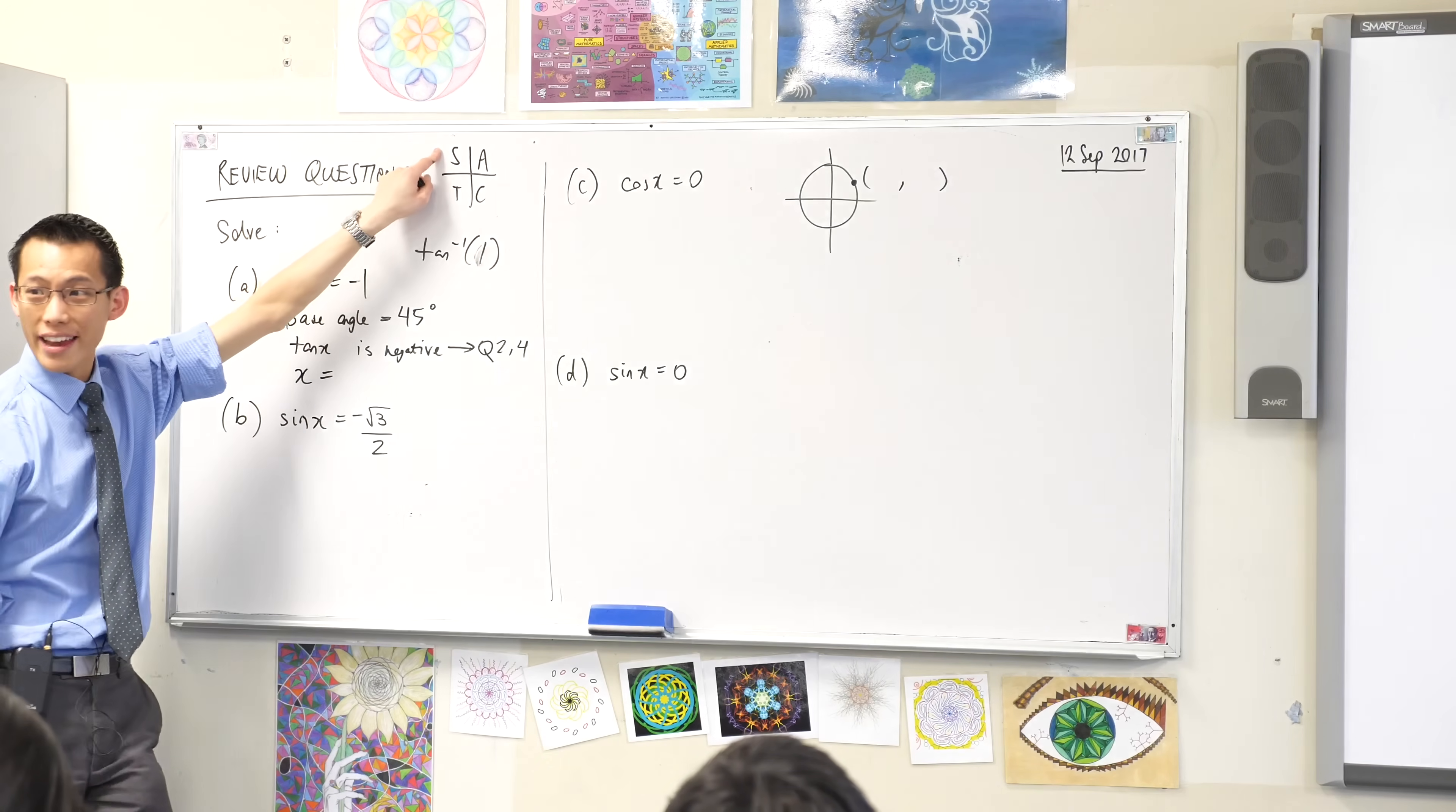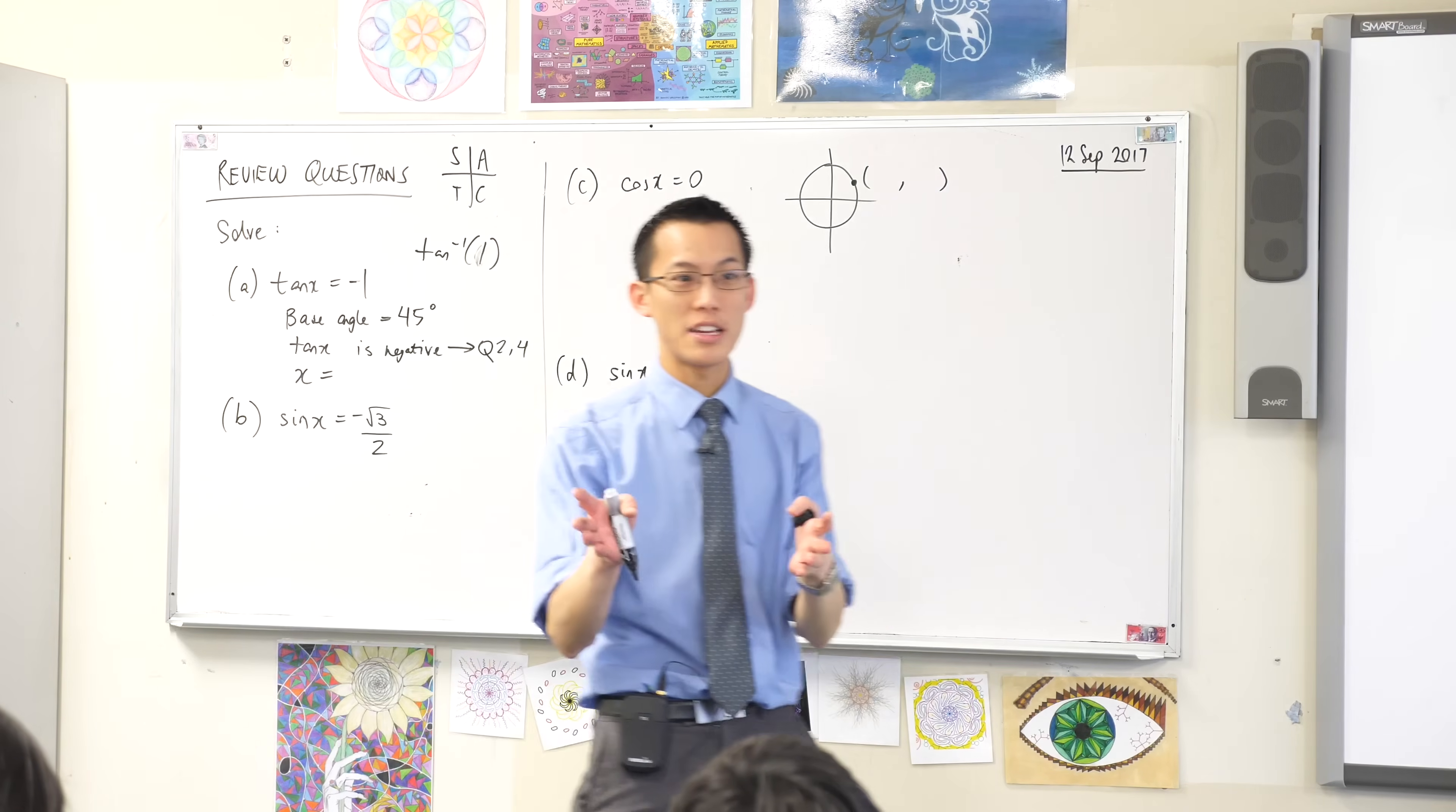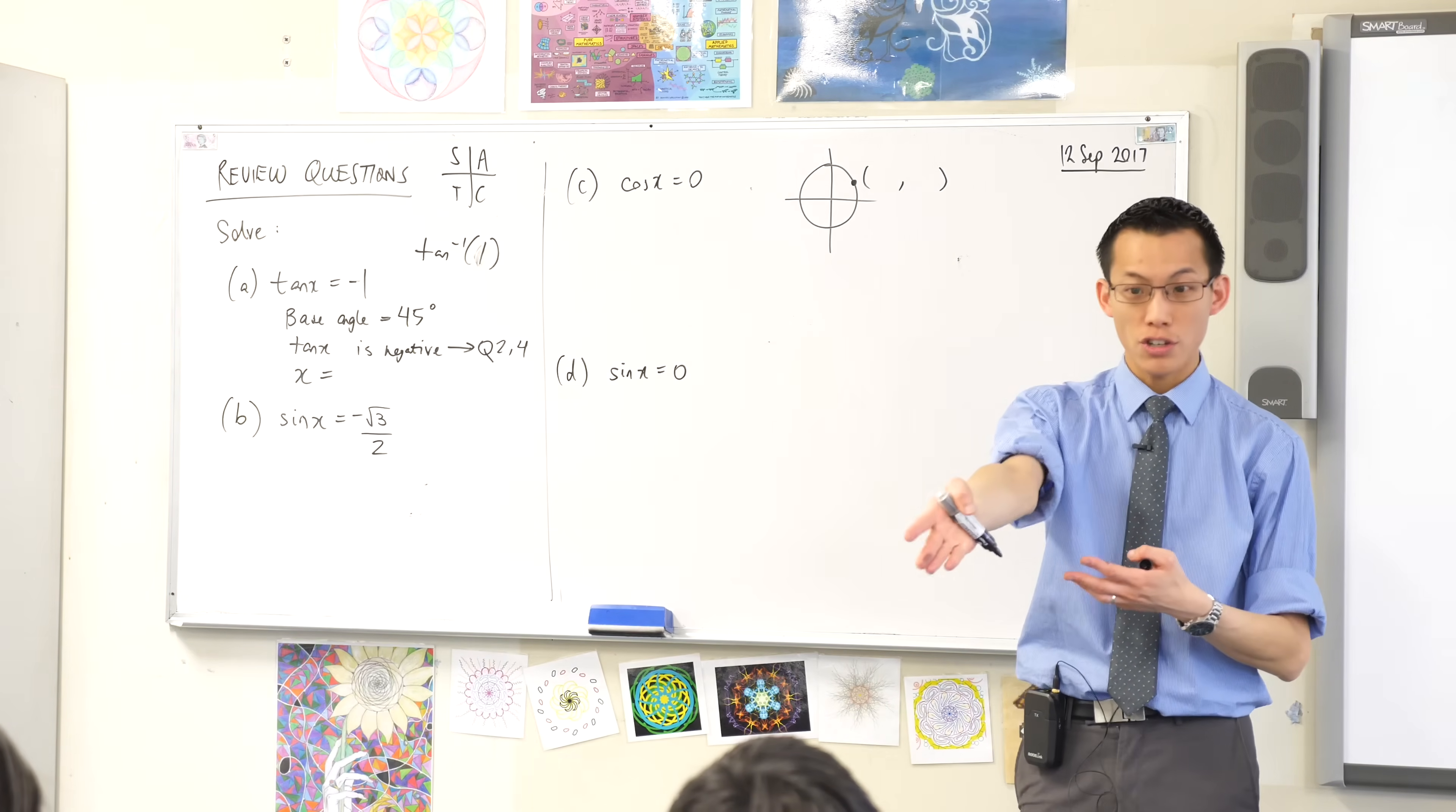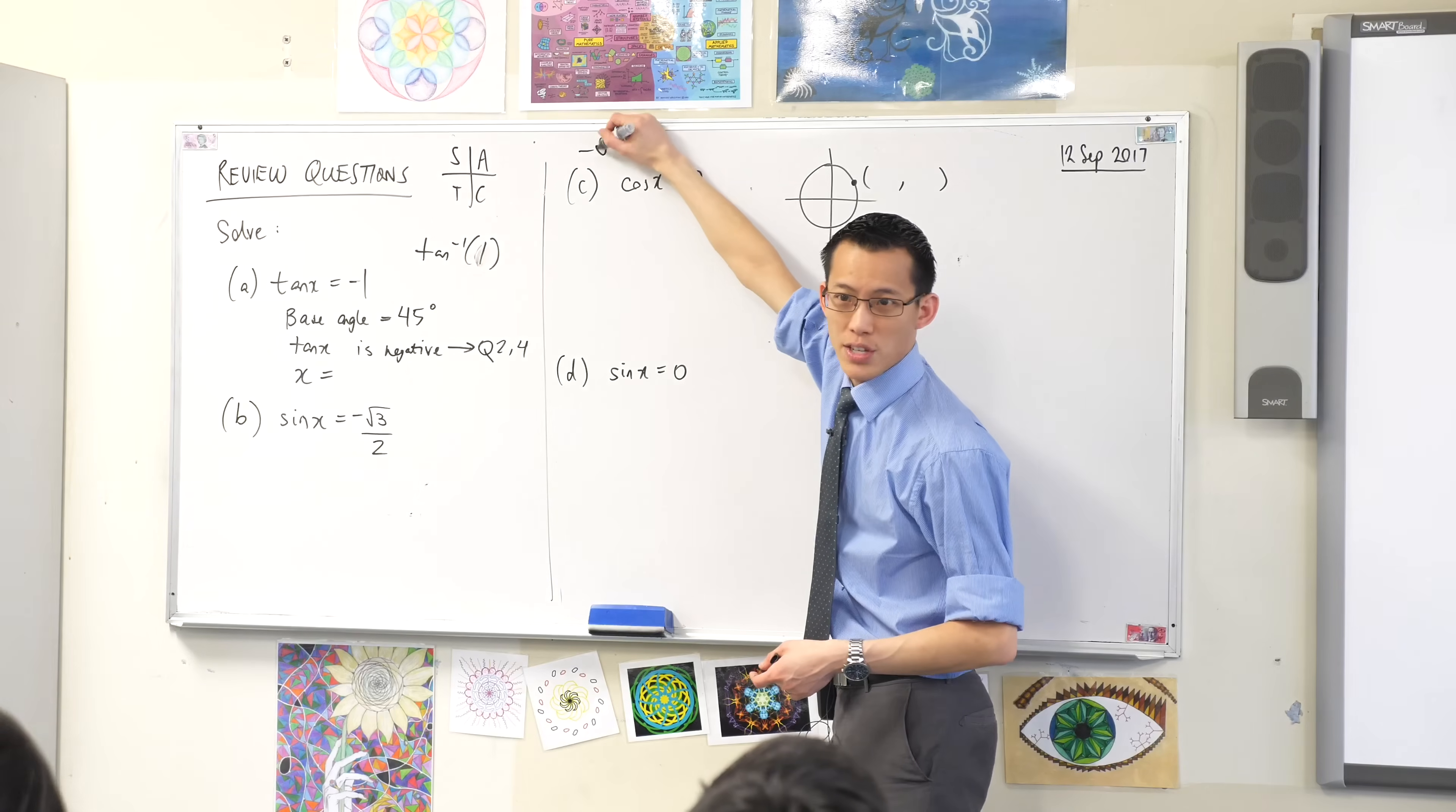If you come over to the second quadrant, if you have angles between what and what? Between 90 and 180 degrees. Pick an angle. Any angle between 90 and 180. Give me an example. 130. 150 is what I heard. Okay, 150. If you type in, you got your calculator there. Type in cos 150. Go ahead. What you should notice is it's a negative number, right?